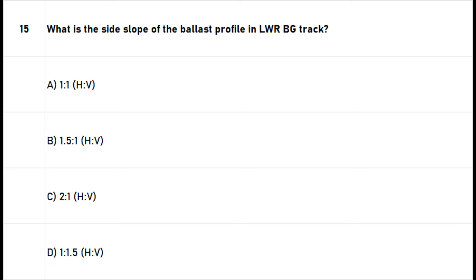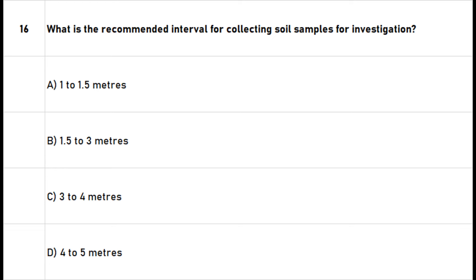Question 15: What is the side slope of the ballast profile in LWR BG track? A. 1:1 (horizontal to vertical). B. 1.5:1 (horizontal to vertical). C. 2:1 (horizontal to vertical). D. 1:1.5 (horizontal to vertical). The right answer is option B: 1.5:1 horizontal to vertical.